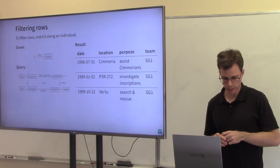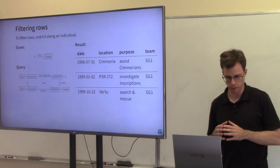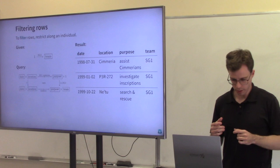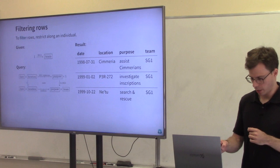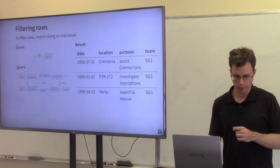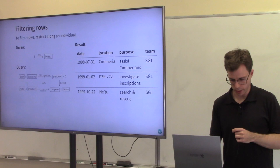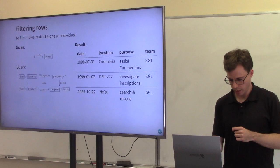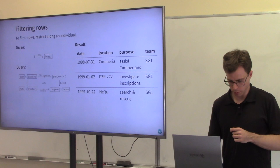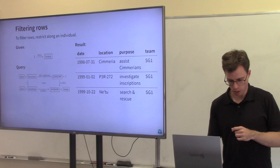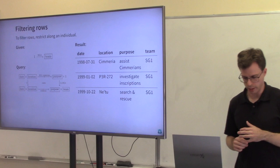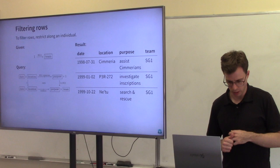To do filtering — selecting rows that satisfy a certain predicate — we use restriction. We can represent an individual as an arrow from the singleton 1 to the corresponding type, so the individual SG-1 would be instanced as that arrow. To filter the rows corresponding to team SG-1, we restrict along that arrow, producing it with the identity as needed, selecting the three rows that have team SG-1.